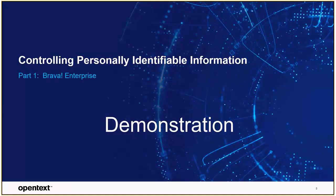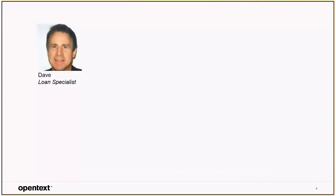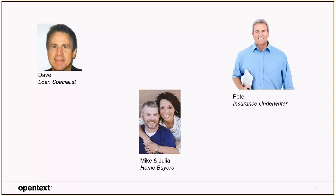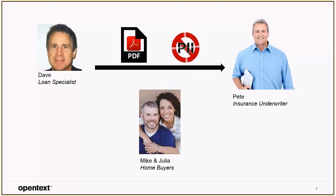I'm going to show you how PII can be easily removed from a stored form using Brava Enterprise. Imagine I'm a loan specialist at a mortgage lender. My customers, Mike and Julia, are in the process of buying a home, and they've requested that I send a copy of their loan application to Pete at their insurance company so they can get a quote for their homeowner's insurance. I have access to the loan application form, but my company policy says I can't share certain customer PII with third parties. I'm going to show you how I can quickly and easily fulfill the customer's request while complying with my company's privacy policies.